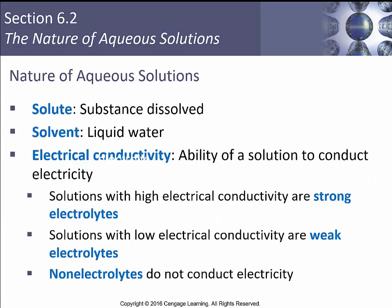The solute is the substance that is dissolved; the solvent is, in this case, liquid water. Electrical conductivity is the ability of a solution to conduct electricity. In the lab, you'll dissolve substances in solution and try to get a light bulb or LED to light up — if it conducts electricity, the light bulb goes on; if it's a non-electrolyte, it stays off. Solutions with high electrical conductivity are called strong electrolytes, those with low conductivity are called weak electrolytes, and non-electrolytes do not conduct electricity.